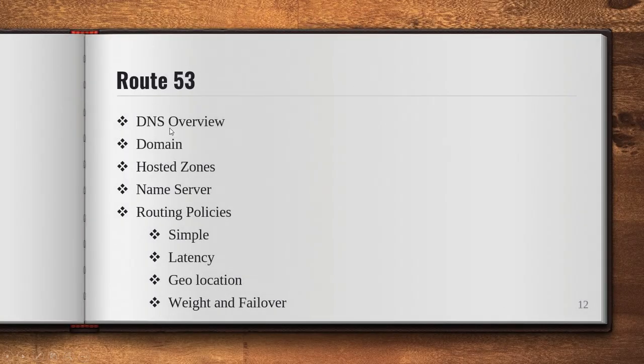Route 53 is the networking part of AWS. Topics covered include: DNS overview, domains, hosted zones, name servers, and routing policies such as simple, latency, geolocation, weighted, and failover.